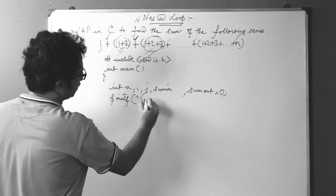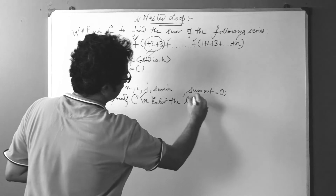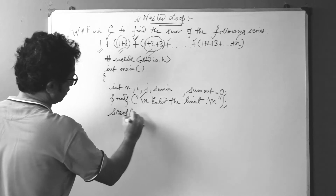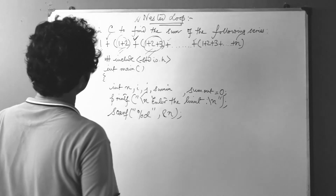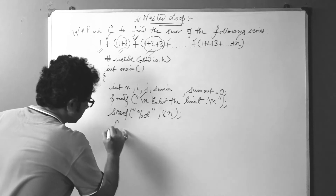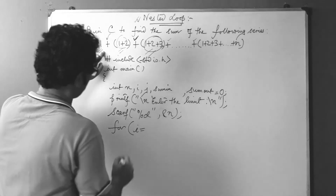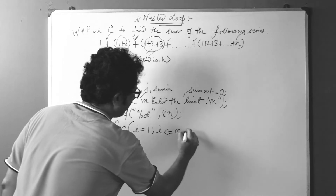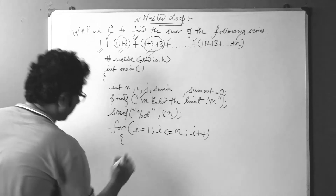We take input from the user: printf 'enter the limit', scanf '%d' &n. Now comes the nested loop logic. We write: for i = 1, i less than or equal to n, i plus plus, then open brace to enter the body of the outer loop.